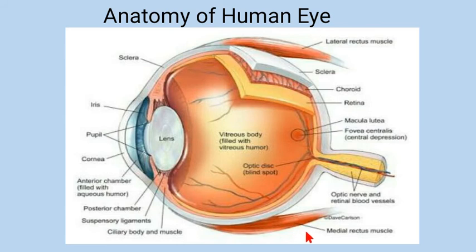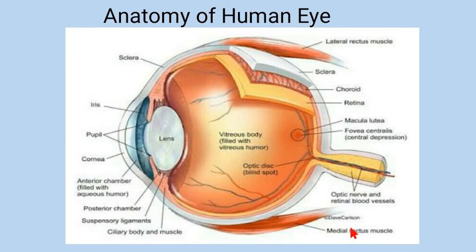The medial rectus muscle and lateral rectus muscle hold the eyeball firmly in the orbit. Because of these muscles, we are able to move our eyeballs left, right, up, and down. This concludes the anatomy of the human eye.